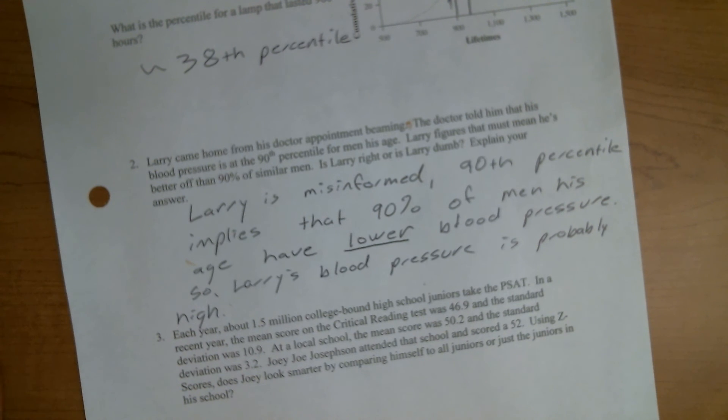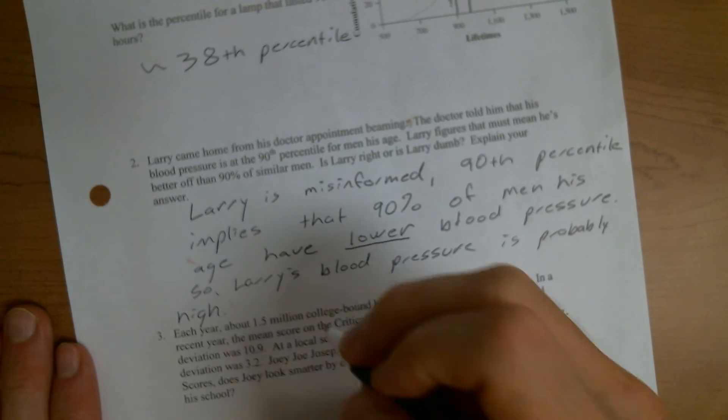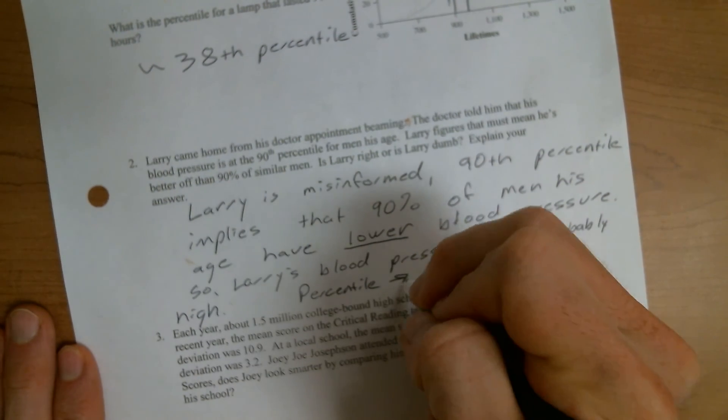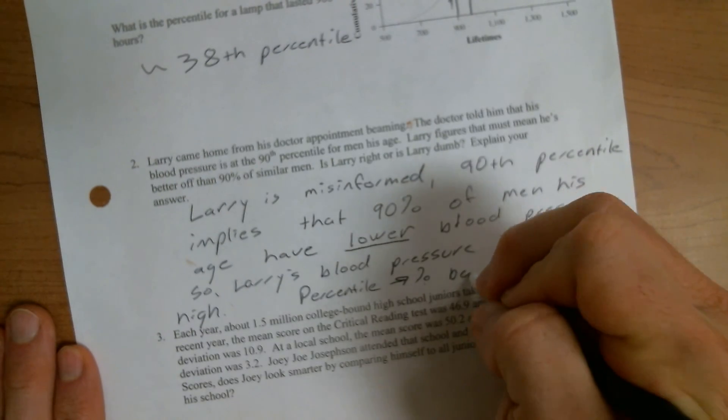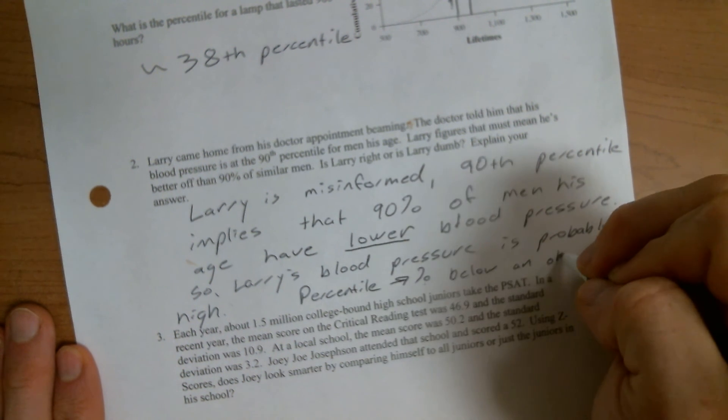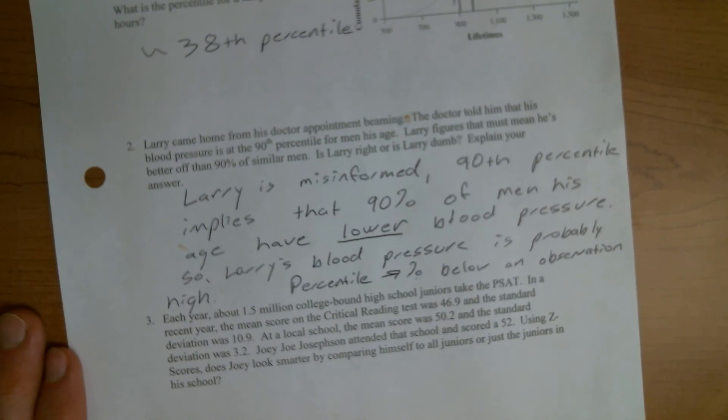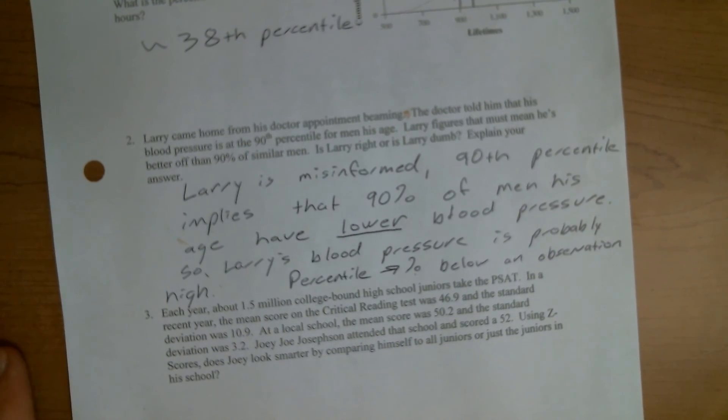So the key here is just knowing the definition of percentile. And a percentile is the percent below an observation. So you have to make sure that you're aware of that. And again, we have said that technically it can be less than or equal to, but in this class to stay consistent, we're always going to do less than an observation. So when I'm assessing you, I'm going to be assessing you on the less than definition, not the less than or equal to.